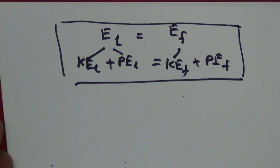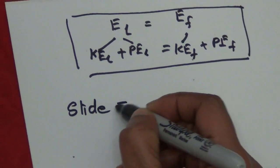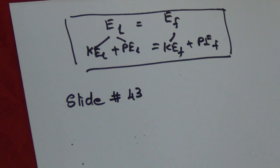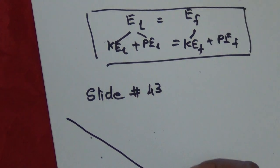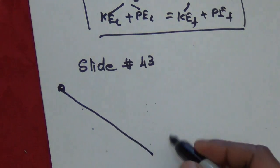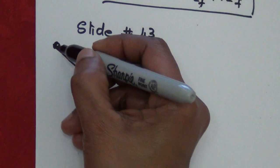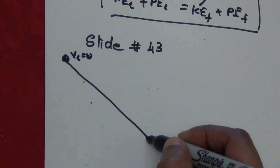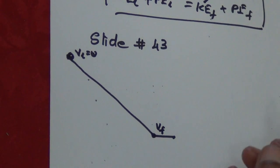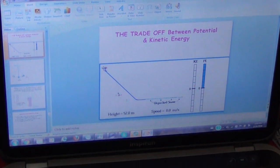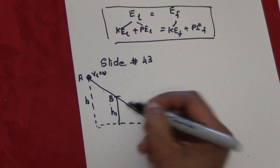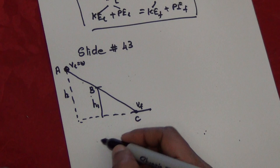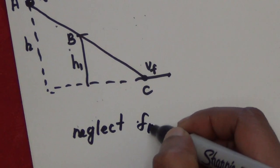Look at slide number 43 in the Chapter 5 PowerPoint. There is a skier sliding from a highest position to a lowest position. Let's take that she starts from rest and reaches the bottom with some final velocity. Let's analyze positions A, B, and C, where the vertical heights are H and H1. We'll assume there is no frictional force or air friction.